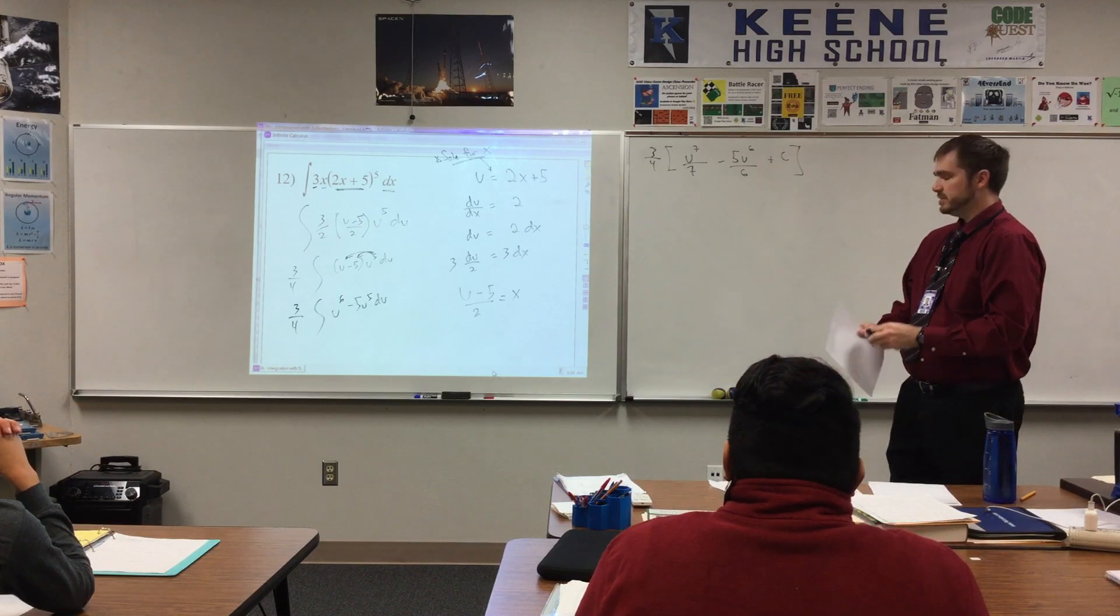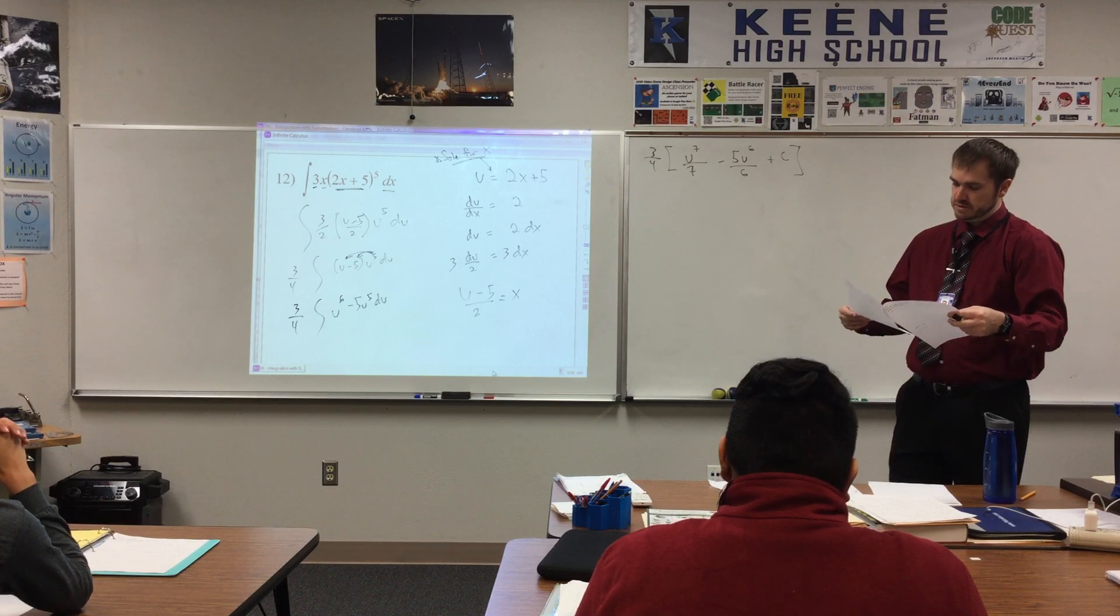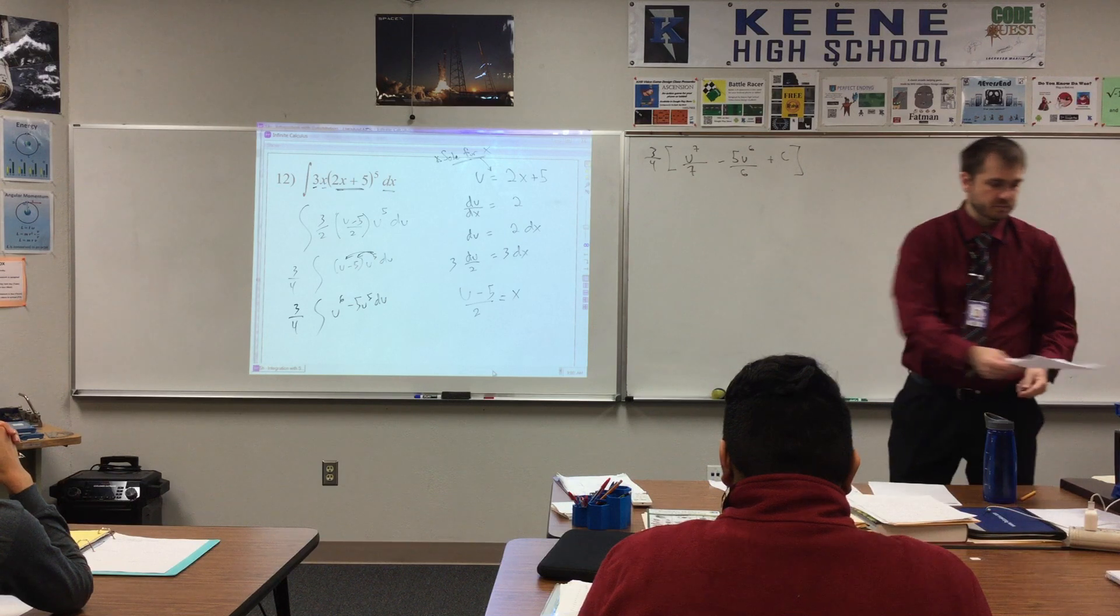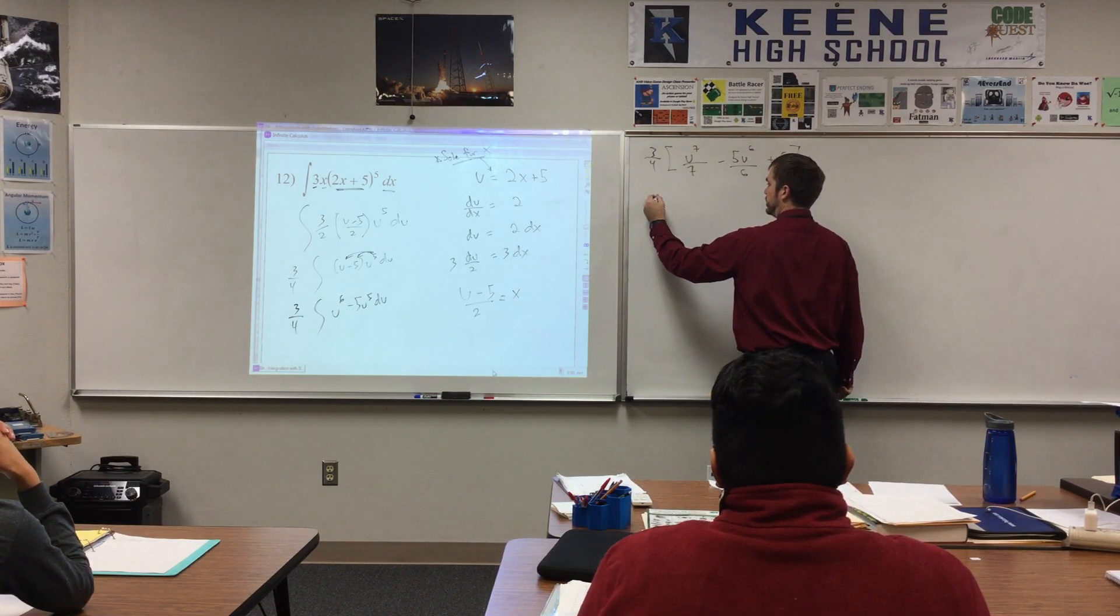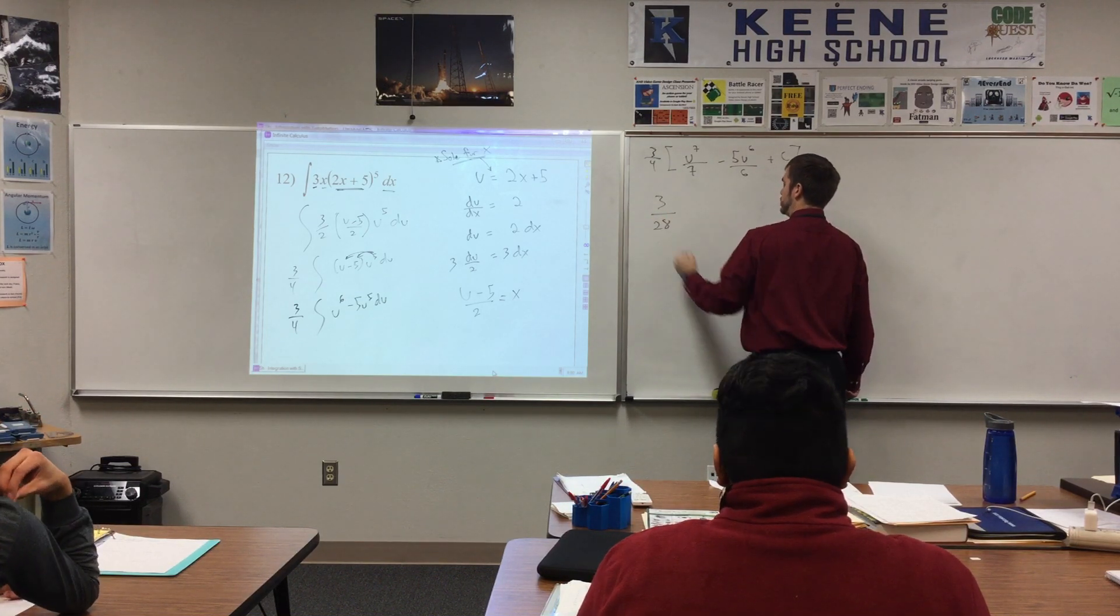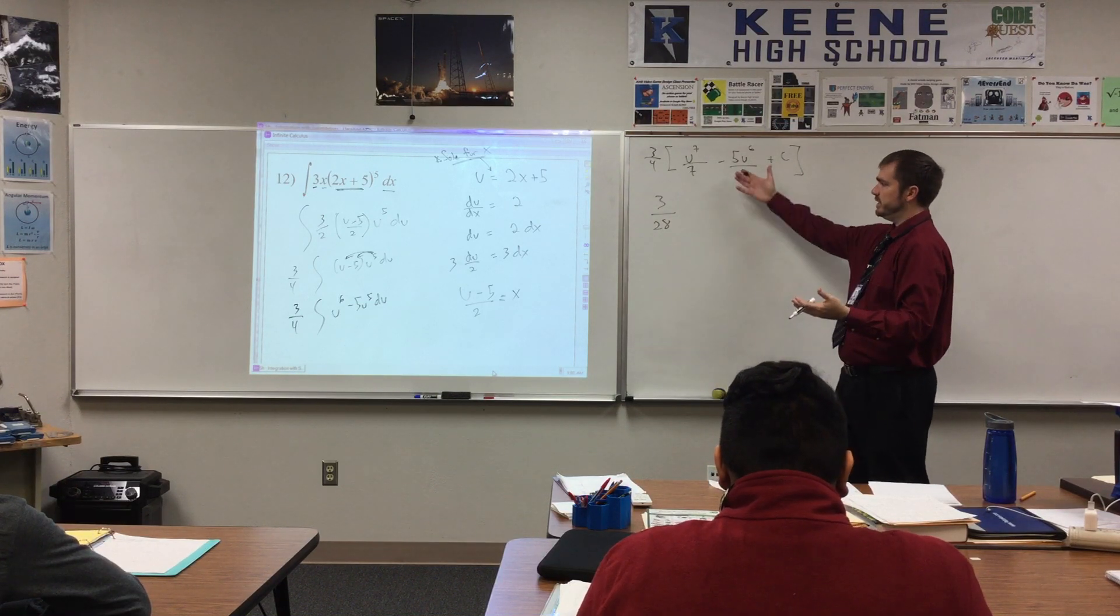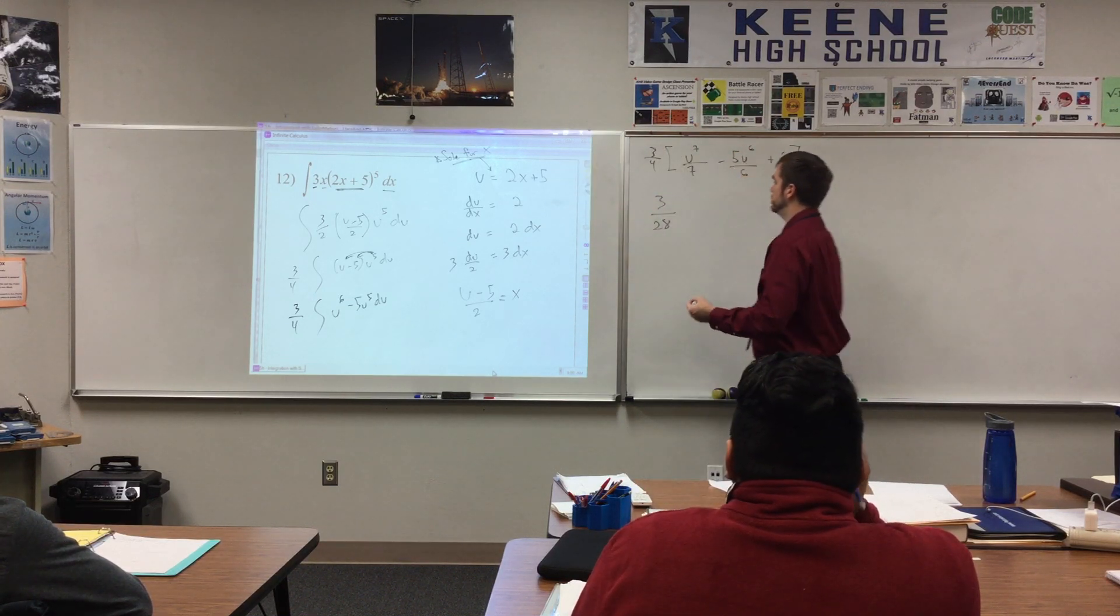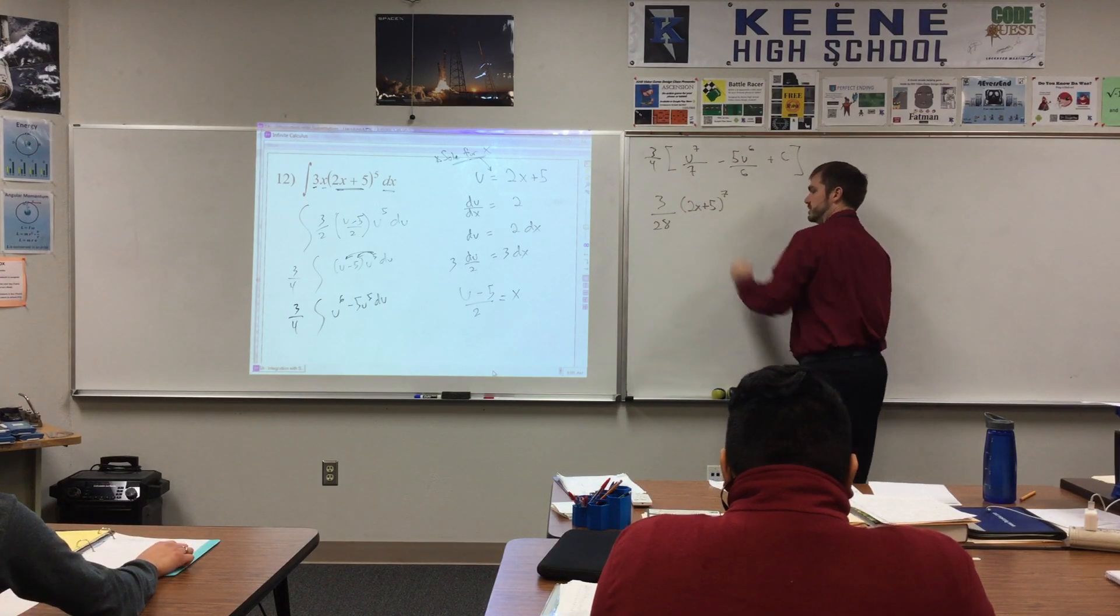I think my answer to u is going to want us to distribute that 3 fourths, so that'll make our grading life a little bit easier. Let's see if I'm right. Yep, I am correct. So, let's go ahead and distribute that 3 fourths. So this is going to be 3 over 28. And you know what? We need to do this extra step anyway because we need to substitute back in for u. u was 2x plus 5. So, 2x plus 5 to the seventh.